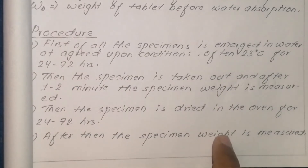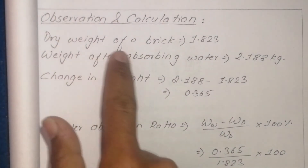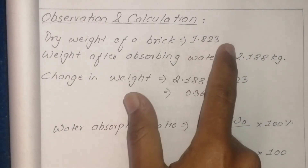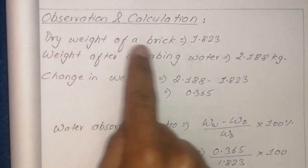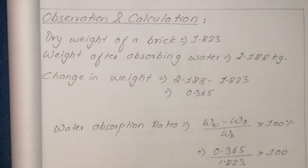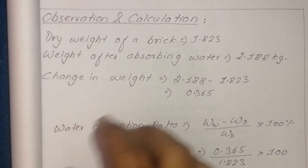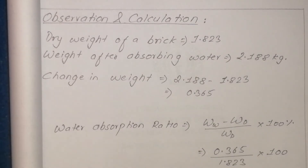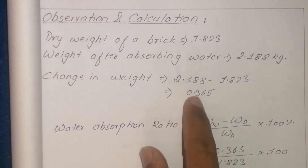Moving to the observation and calculation section: the dry weight is 1.823 kg. After absorbing water at 23 degrees Celsius, the weight is 2.15 kg, or more precisely 2.188 kg. The change in weight is 0.365 kg.